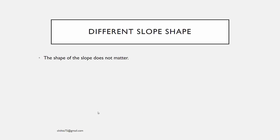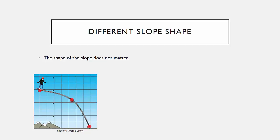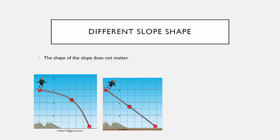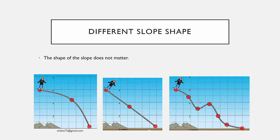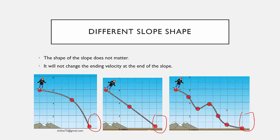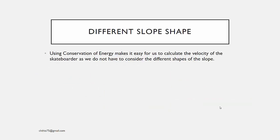For different slope shapes — whether concave, straight, or even a wiggly curve — it does not matter. At the end of the slope, when the person reaches the same position, it does not change the ending velocity. This is the power of using conservation of energy: we do not have to consider the different shapes of the slope.